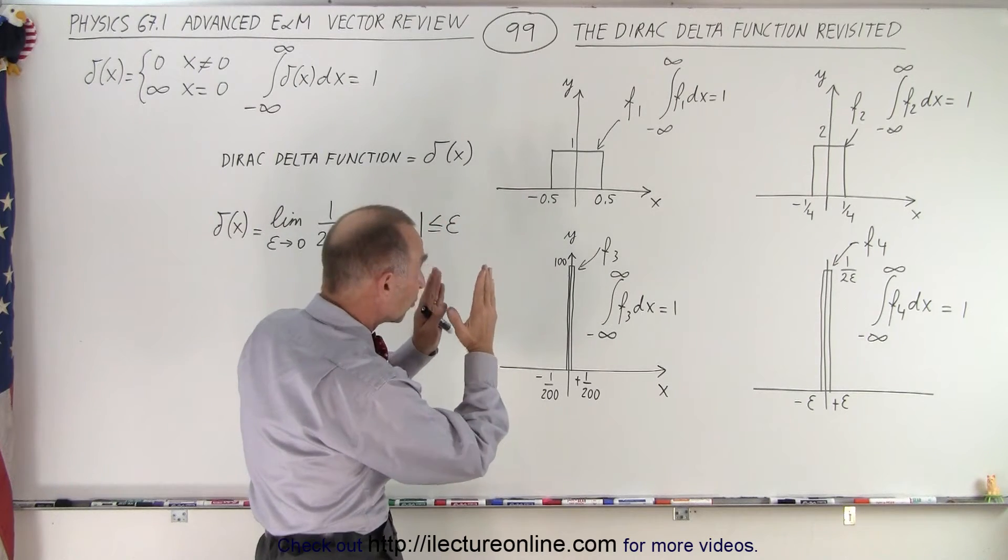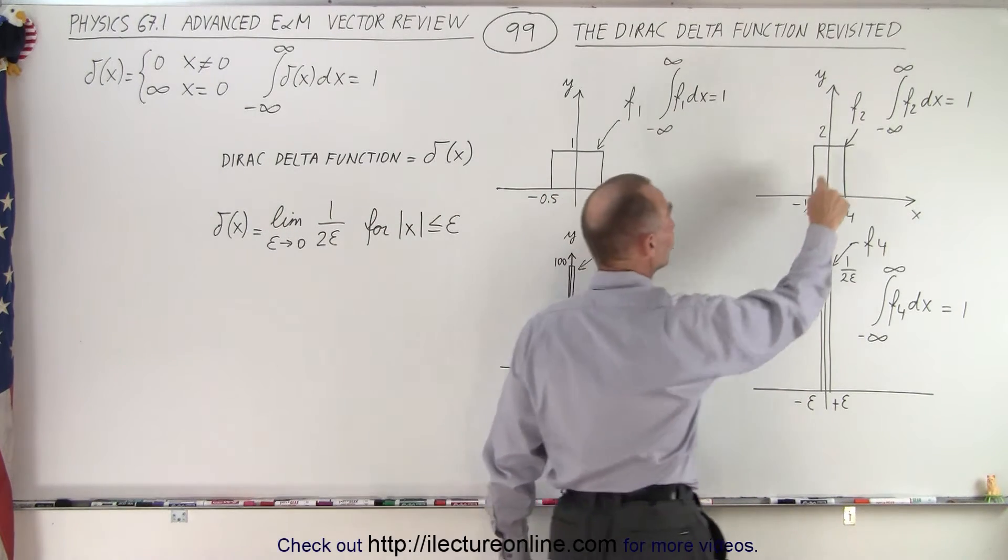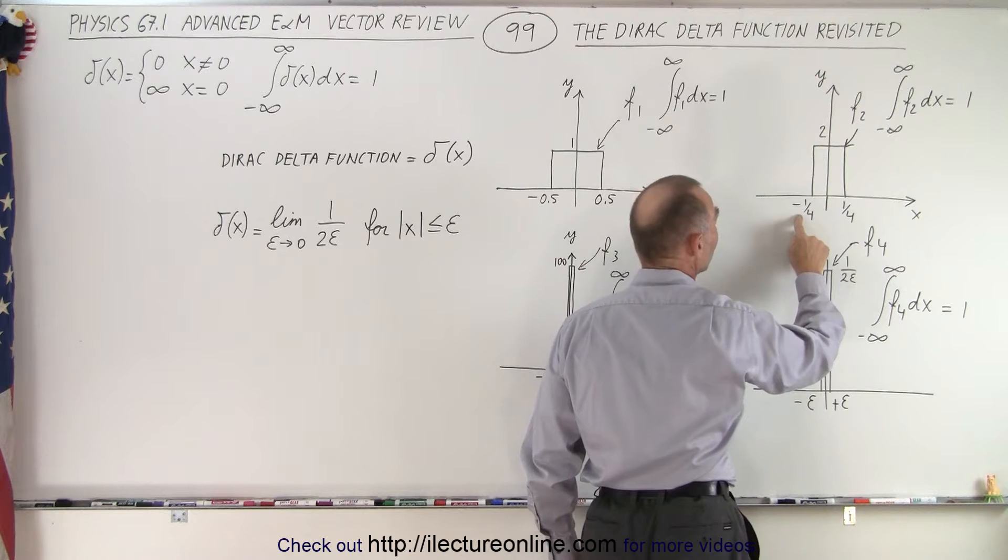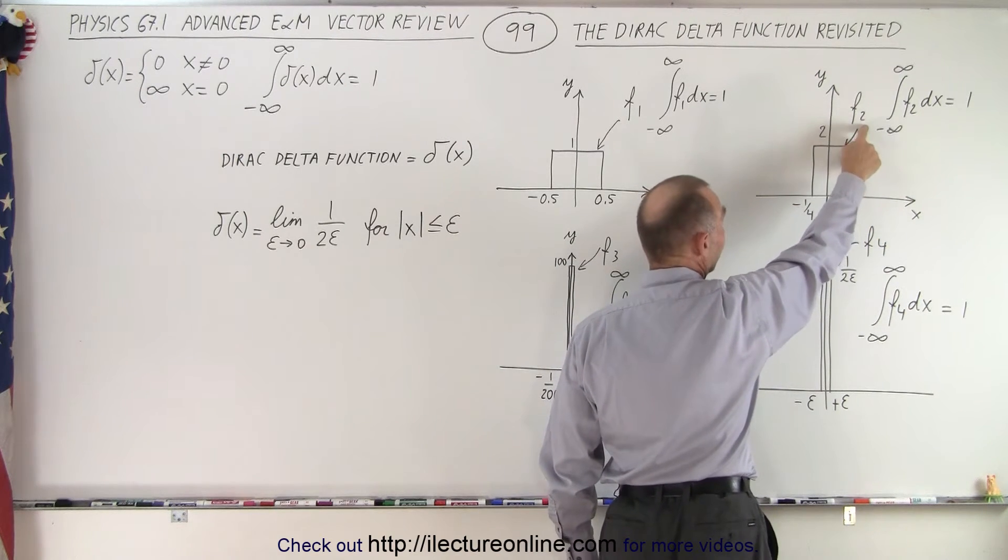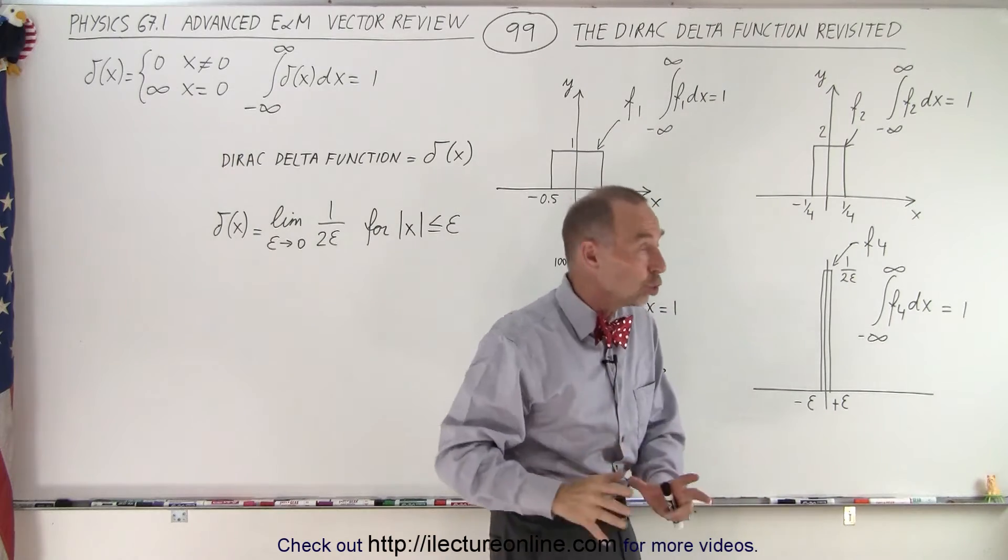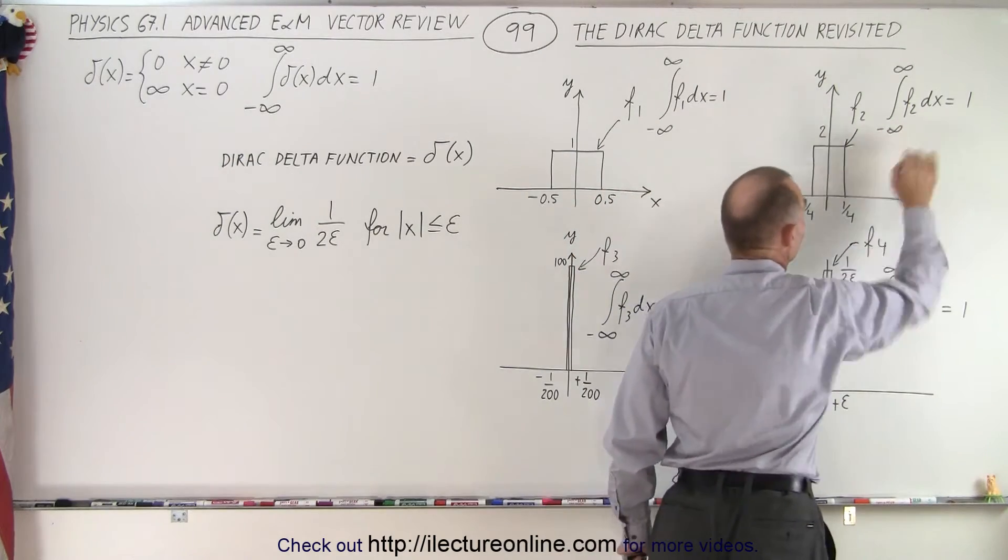But now let's make it a little bit more skinny. Let's say that the height is equal to 2, and we go from minus 1 quarter to plus 1 quarter. The area is equal to 1, so when we integrate over this function, let's call it function 2, we still get 1.